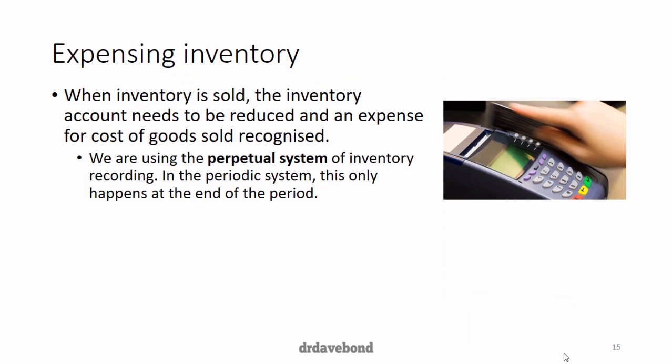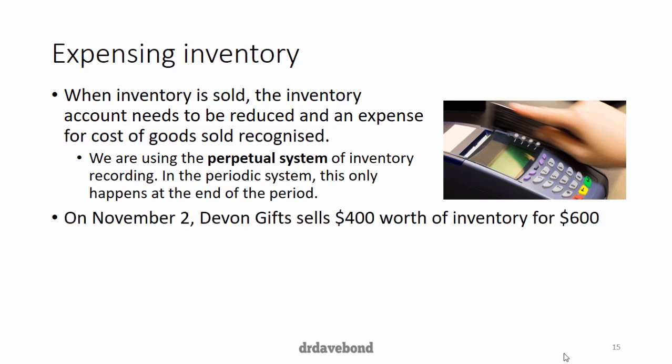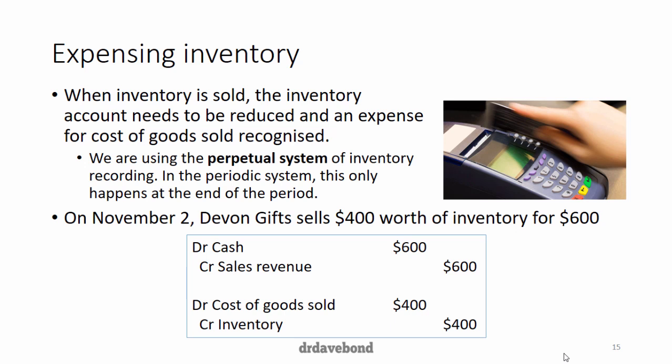When inventory is sold, the inventory account needs to be reduced and cost of goods sold recognized. There are two inventory systems: perpetual and periodic. We'll focus on the perpetual system, which records things as they happen rather than only at the end of the period. On November 2nd, Devon sells $400 worth of inventory for $600. We debit cash $600 and credit sales revenue $600, then debit cost of goods sold $400 and credit inventory $400.